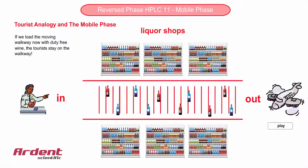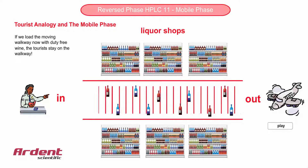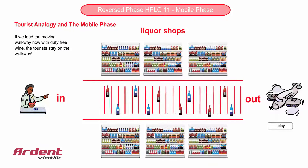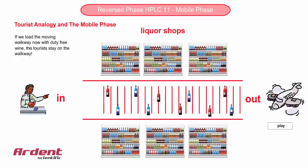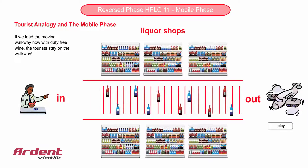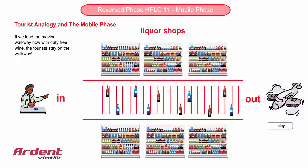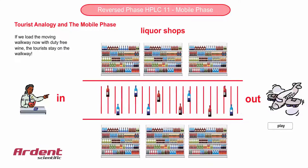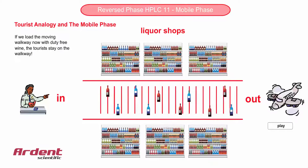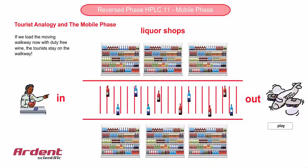In this animation, we still have the liquor shops, but what if we could modify the moving walkway? Not the speed of the walkway, but the nature of the walkway. For example, instead of just having a plain walkway, what if we could start to put bottles of wine on the walkway?